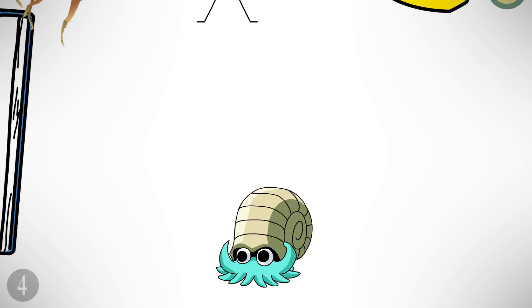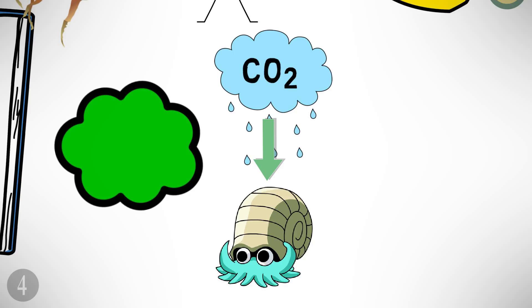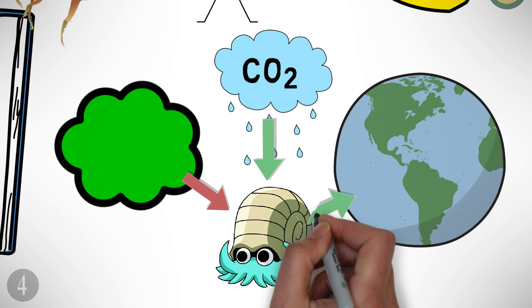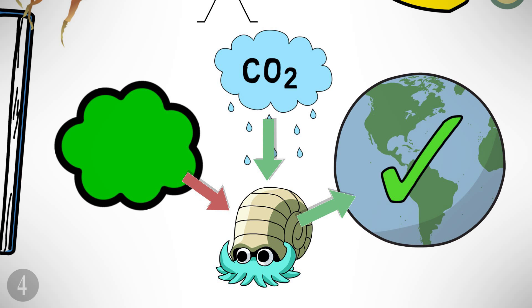Number four: marine organisms capture atmospheric carbon in the form of CO2 when it falls as rain and they use it to make their shells. By locking the carbon in their shells, they keep it from being evaporated into the atmosphere where it would build up dangerously as a greenhouse gas. This keeps the planet stable and cool.